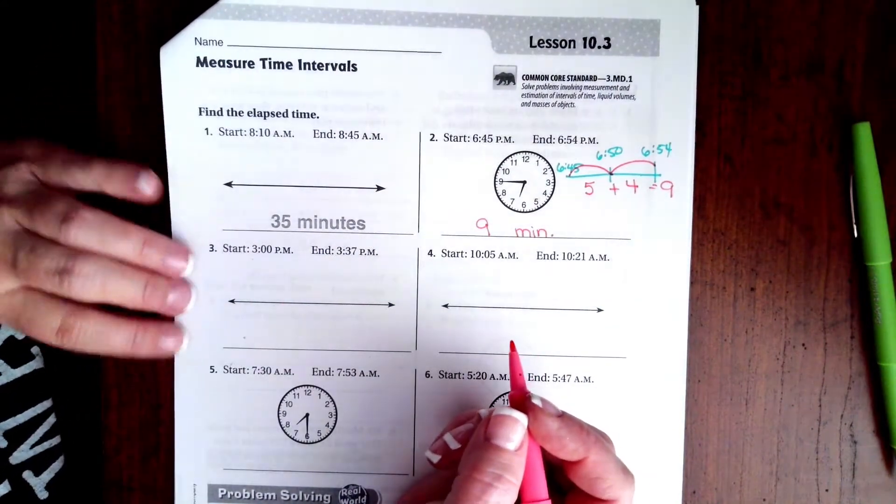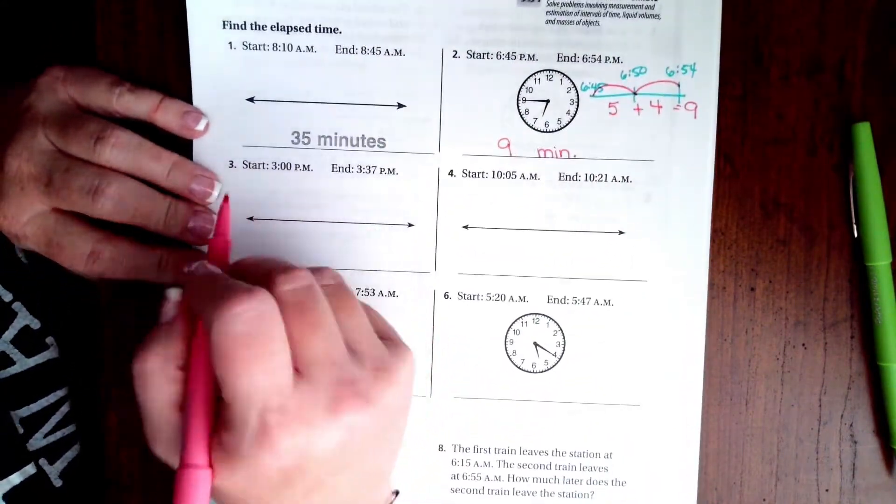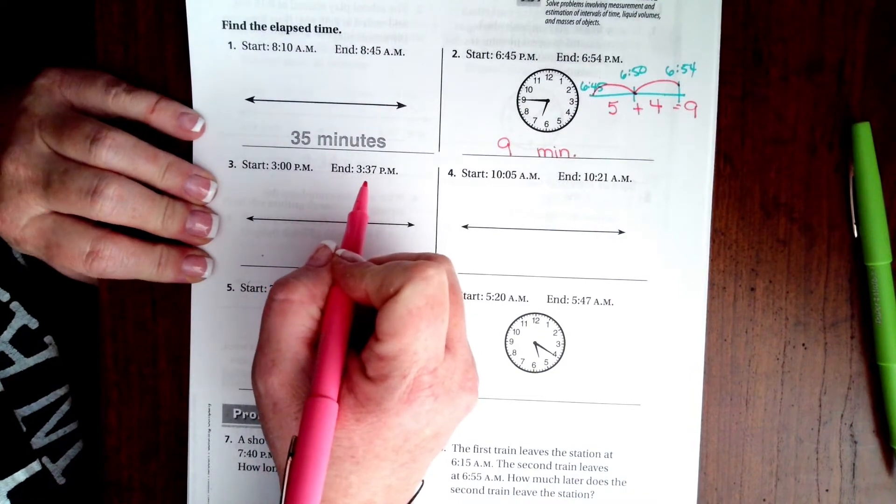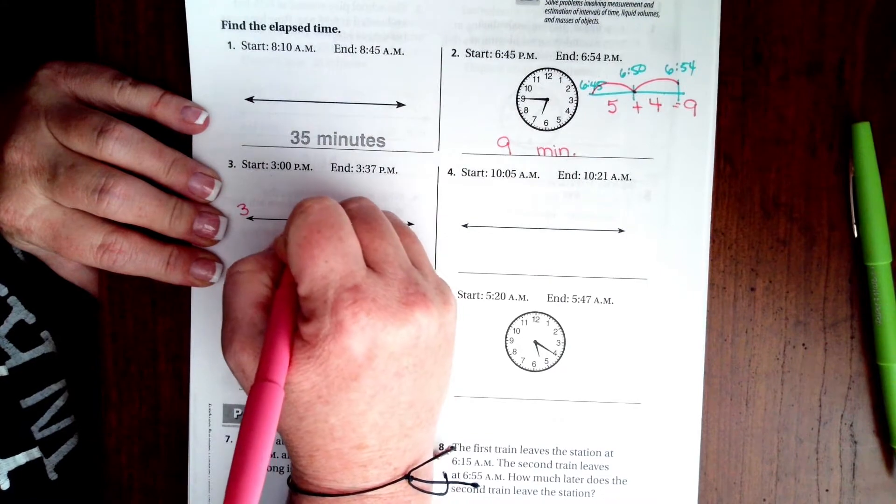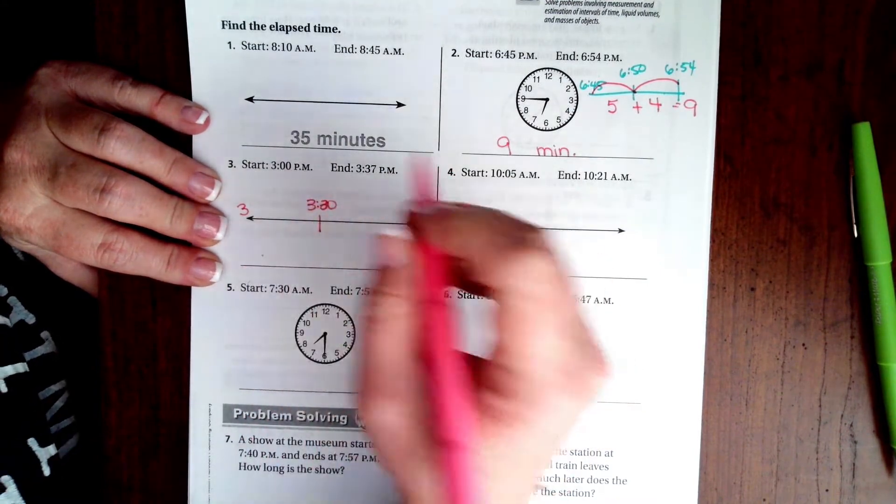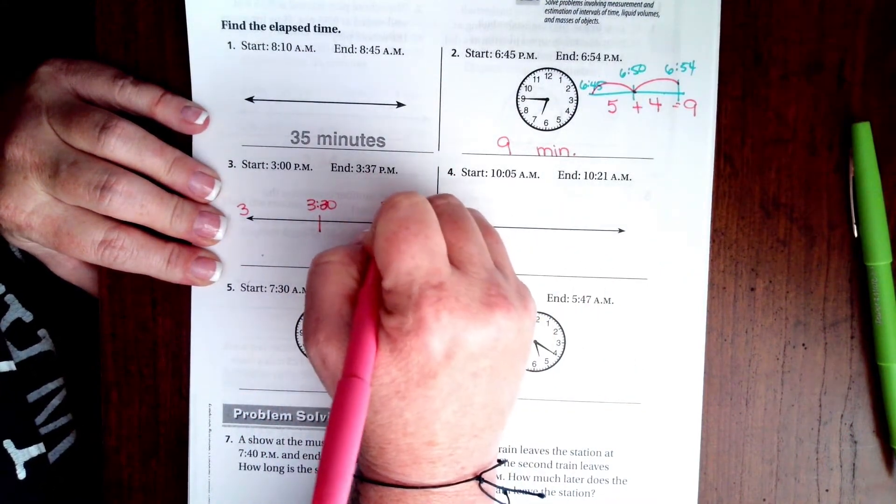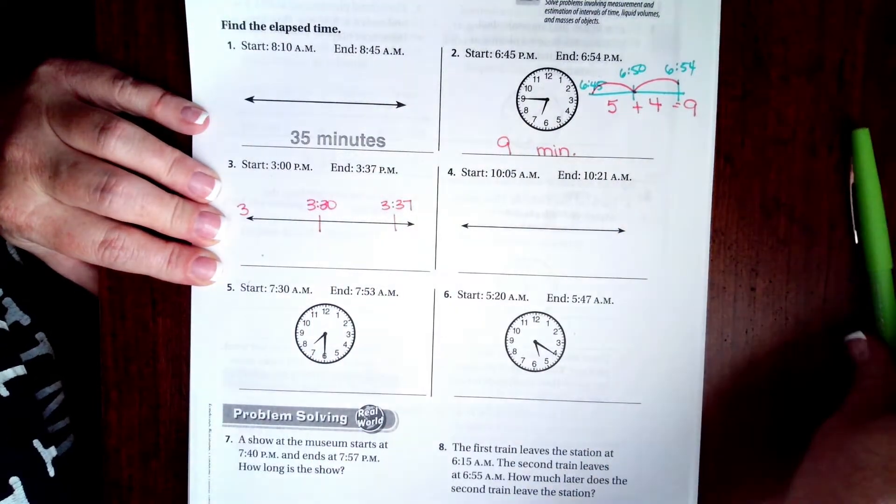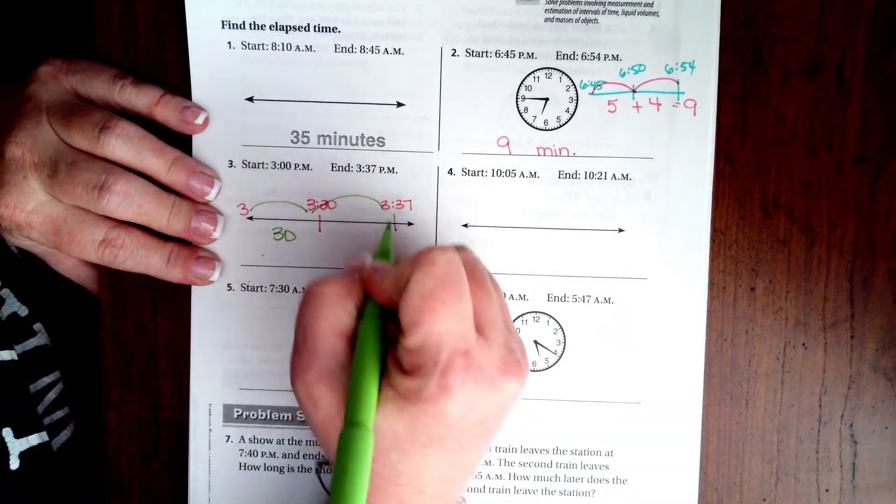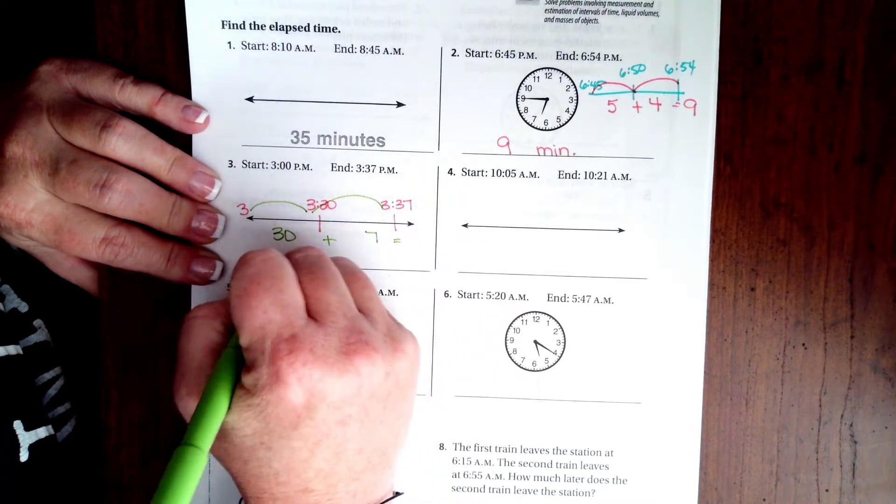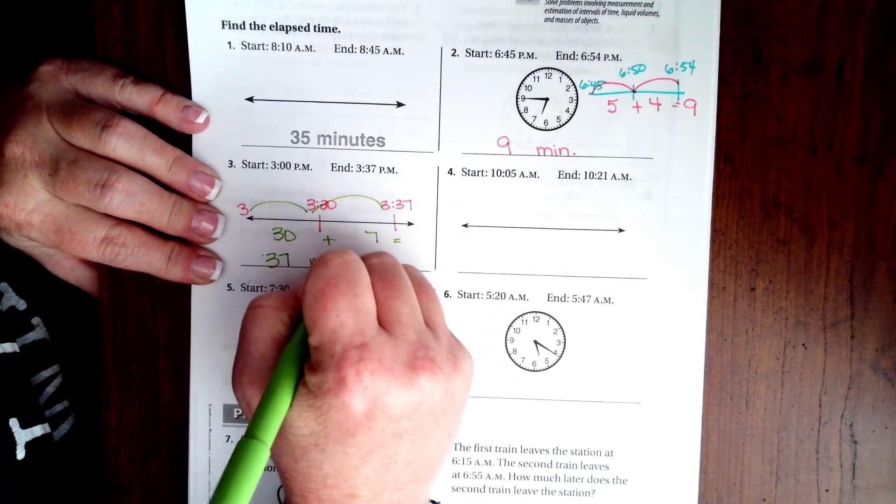Now we start at 3 p.m. and we end at 3:37. So I would go from 3 p.m., I would do 3:30 right there and I would do 3:37 right there. We do our bumps, that's 30 minutes, and then we're going to do another bump, that's seven minutes. Well 30 plus 7 is 37 minutes.